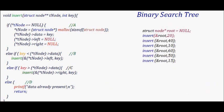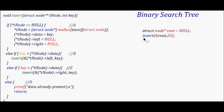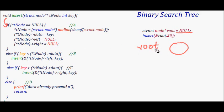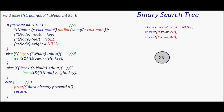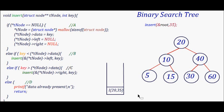Let's also look at a simpler case: inserting the very first node, value 20, when the tree is empty. The root is null, so we directly malloc a new node, set its data to the key (20), set left child to null, and right child to null. That becomes our tree. Then inserting 40 follows the comparison logic, placing 40 as the right child. This demonstrates the full insertion process in a binary search tree.